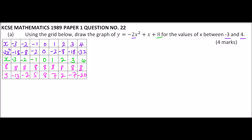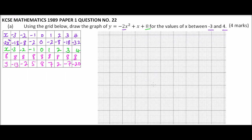These are the values we'll use to plot our quadratic graph. Setting up the grid: along the x-axis we have 1, 2, 3, 4 and -1, -2, -3. For the y-axis I use a different scale — 5, 10 going up, and -5, -10, -15, -20 going down. Always remember to label your axes.